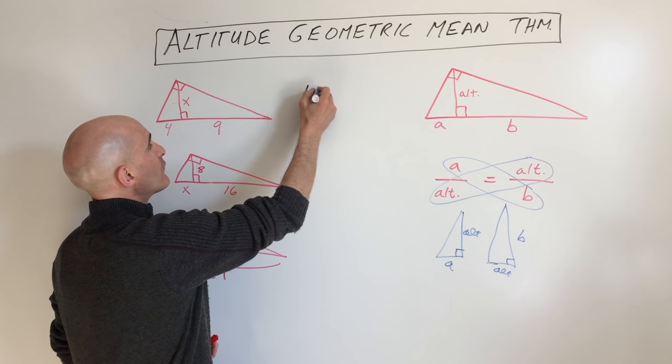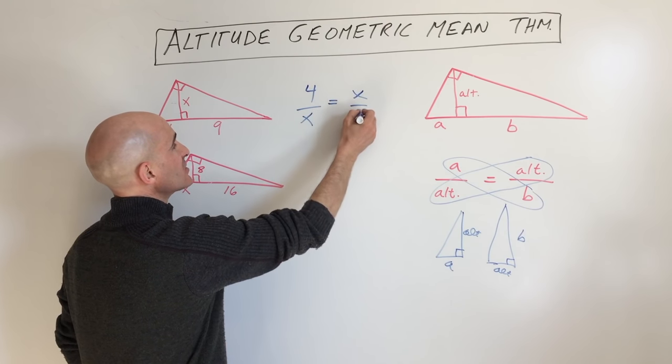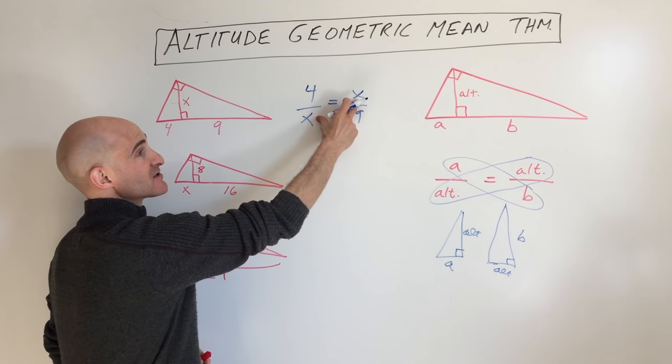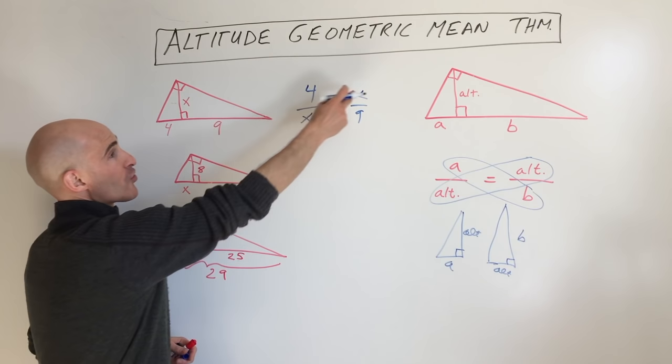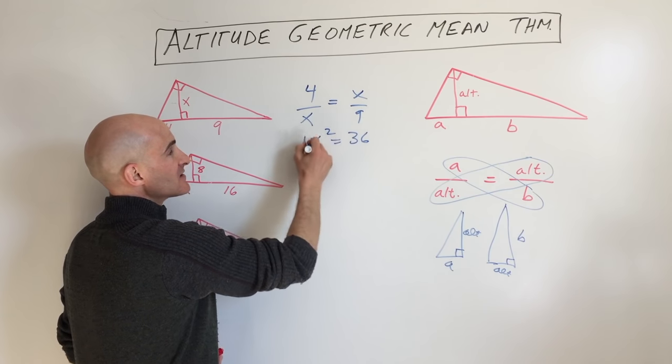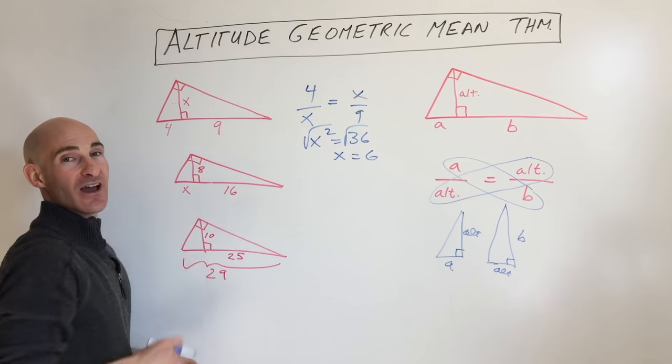We say 4 is to x as x is to 9. The altitude is the geometric mean, these are the means, and these are the extremes, 4 and 9. Cross multiply, so you get x squared equals 36, and take the square root of both sides to get x equals 6. That's the altitude.